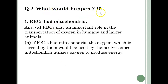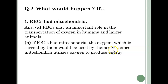What would happen if — Question 1: RBCs had mitochondria. Answer A: RBCs play an important role in the transportation of oxygen in humans and larger animals. B: If RBCs had mitochondria, the oxygen which is carried by them would be used by themselves, since mitochondria utilizes oxygen to produce energy.